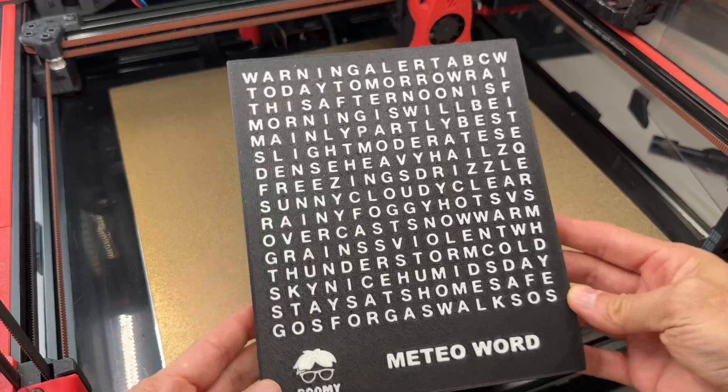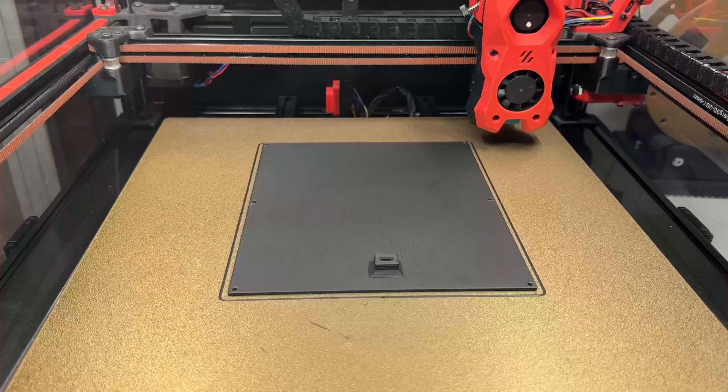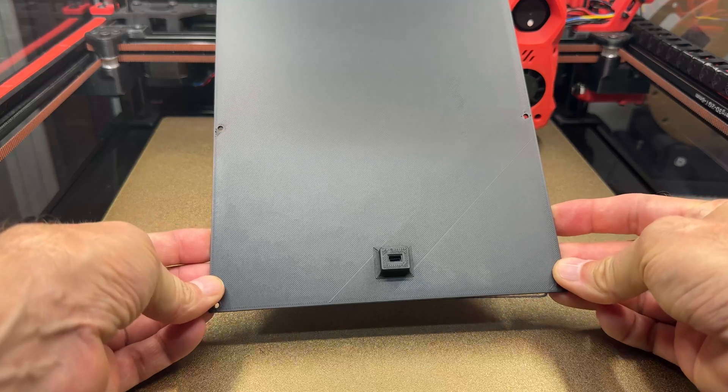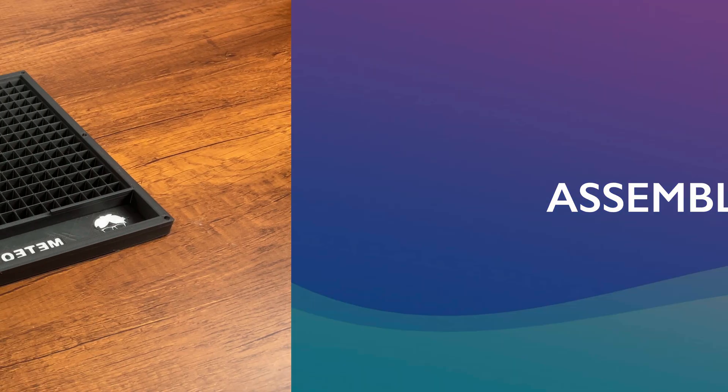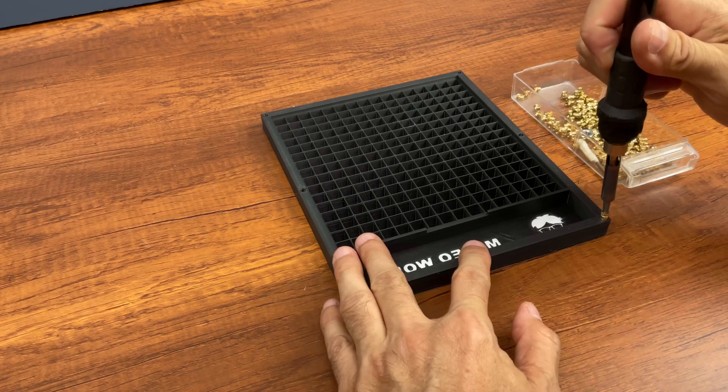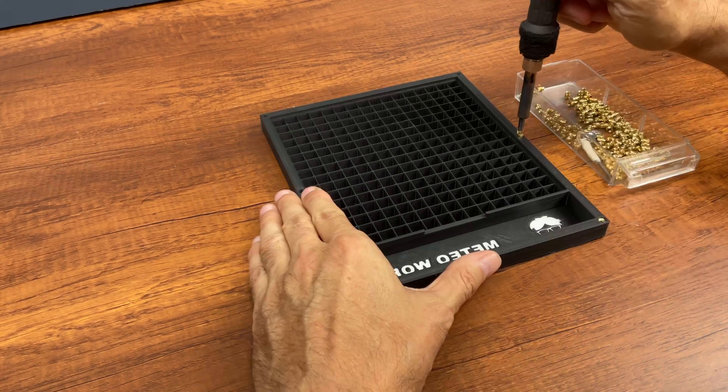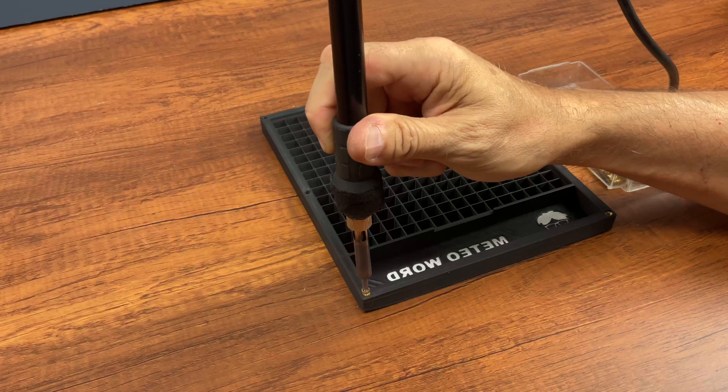And this is the final result. Now we add the threaded inserts for fixing the bottom of the box using a soldering iron.